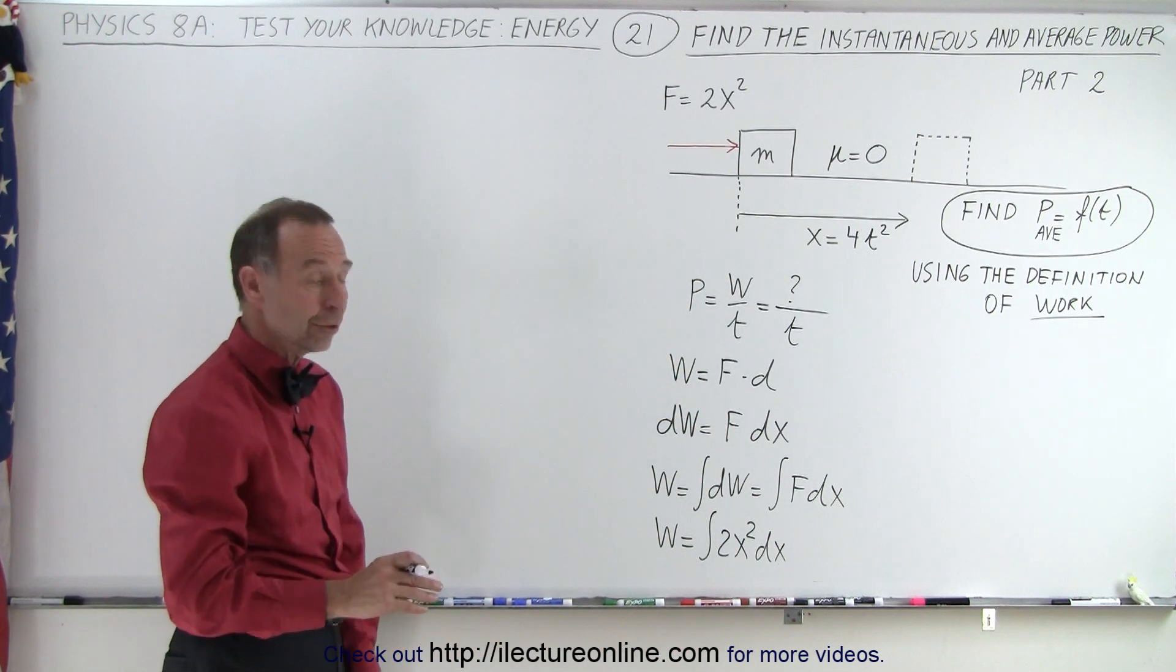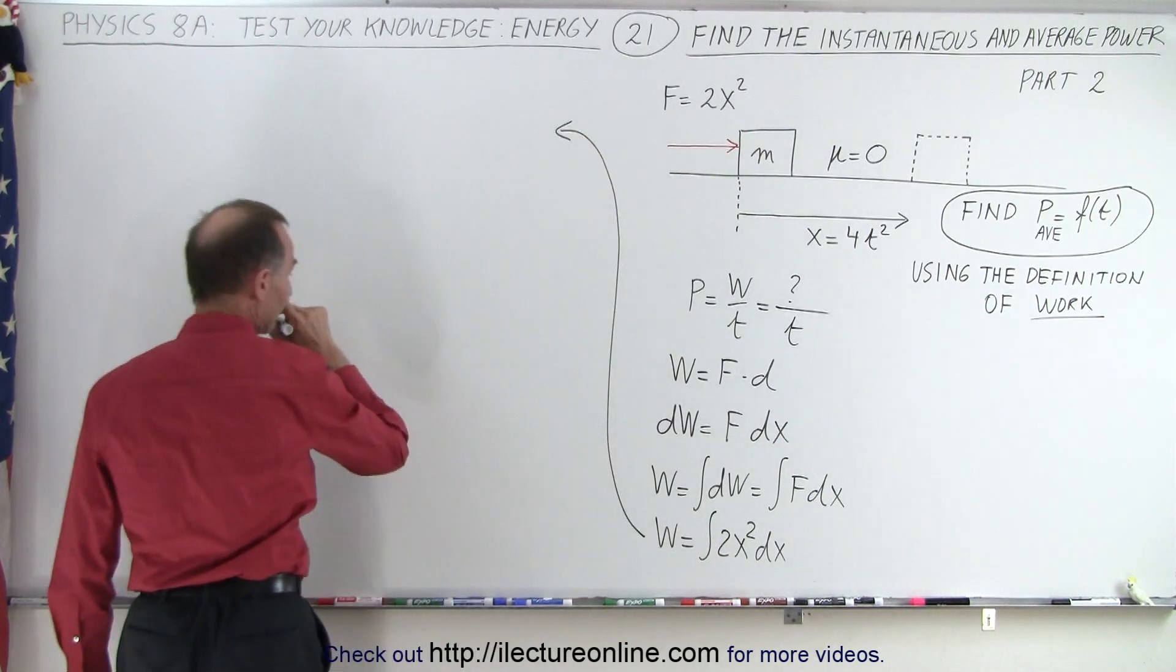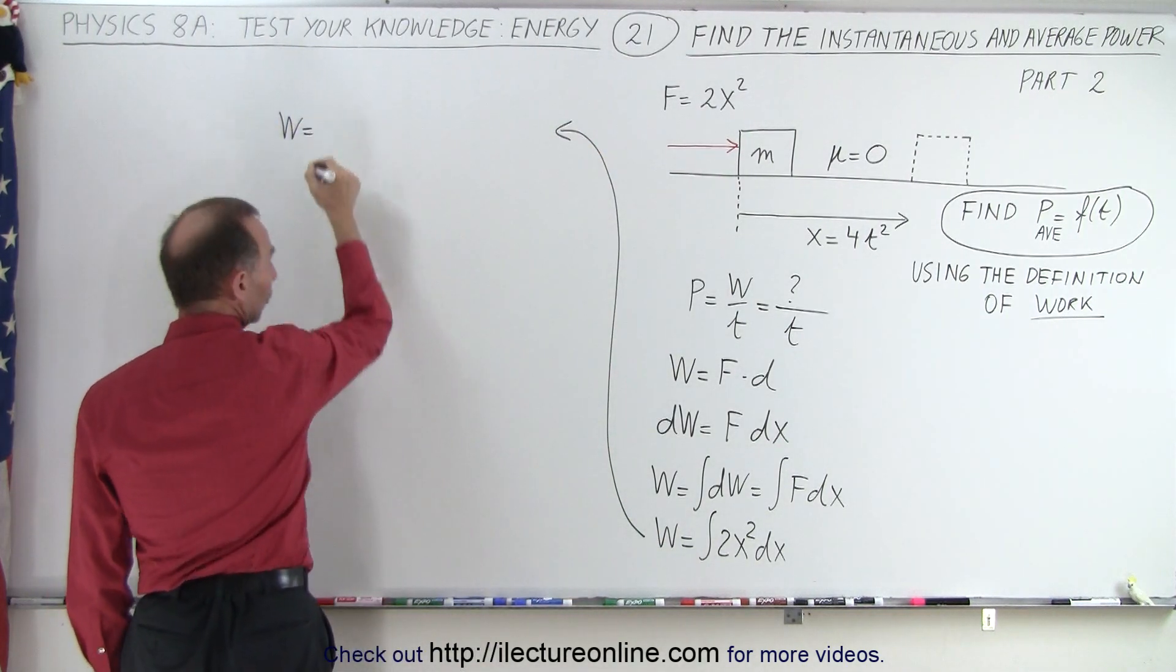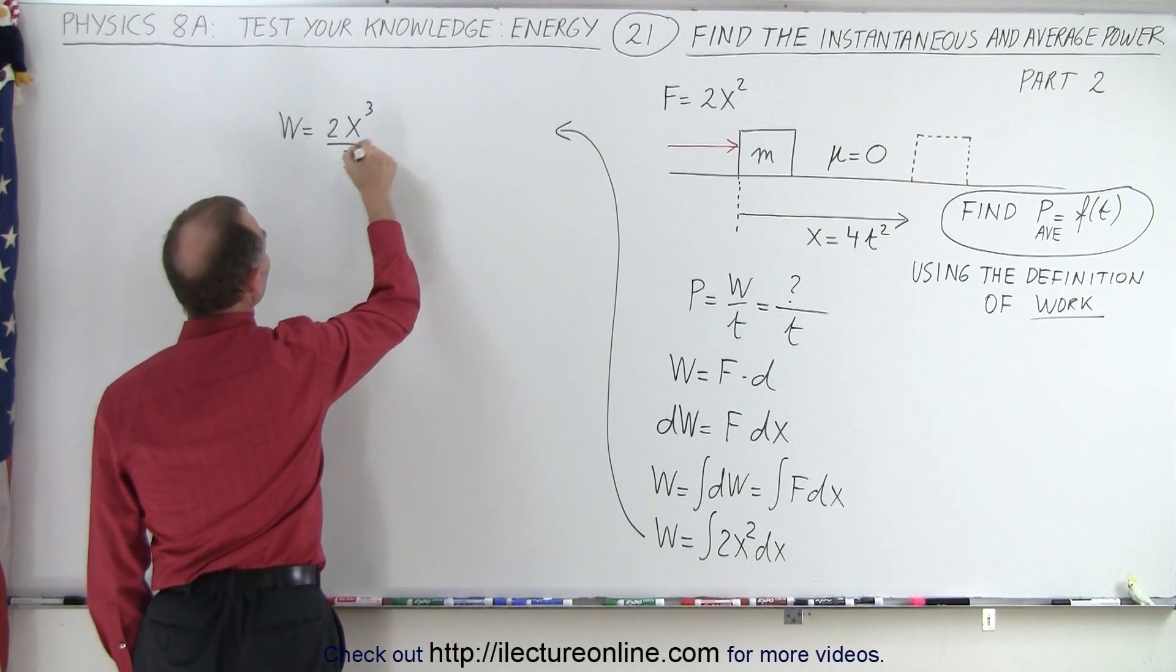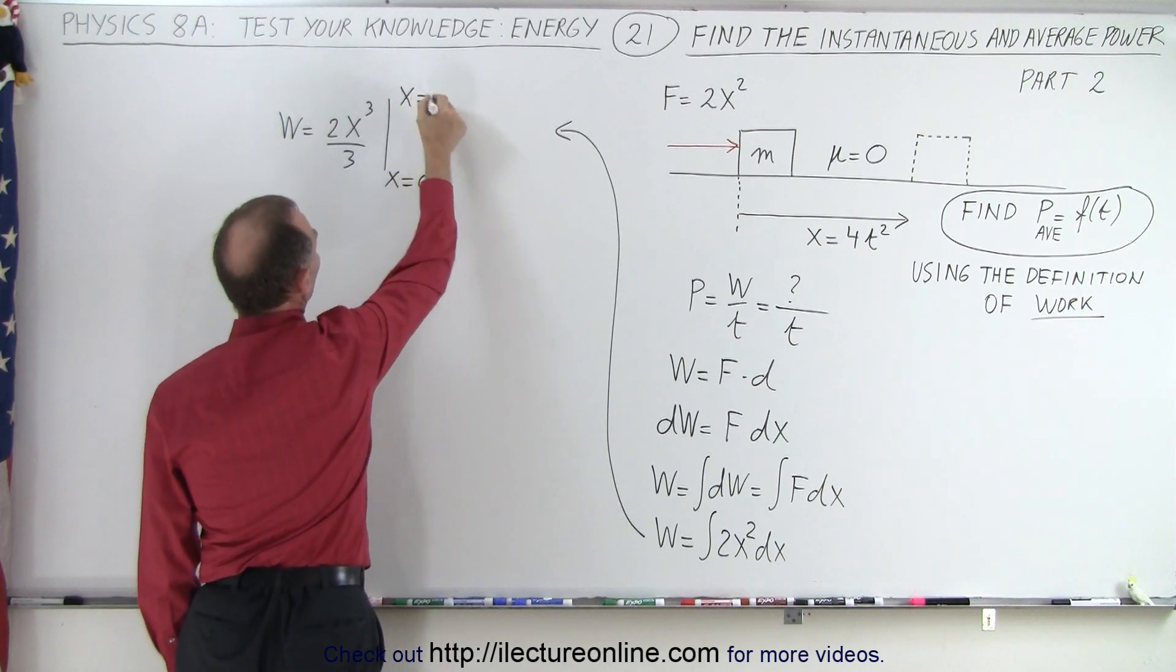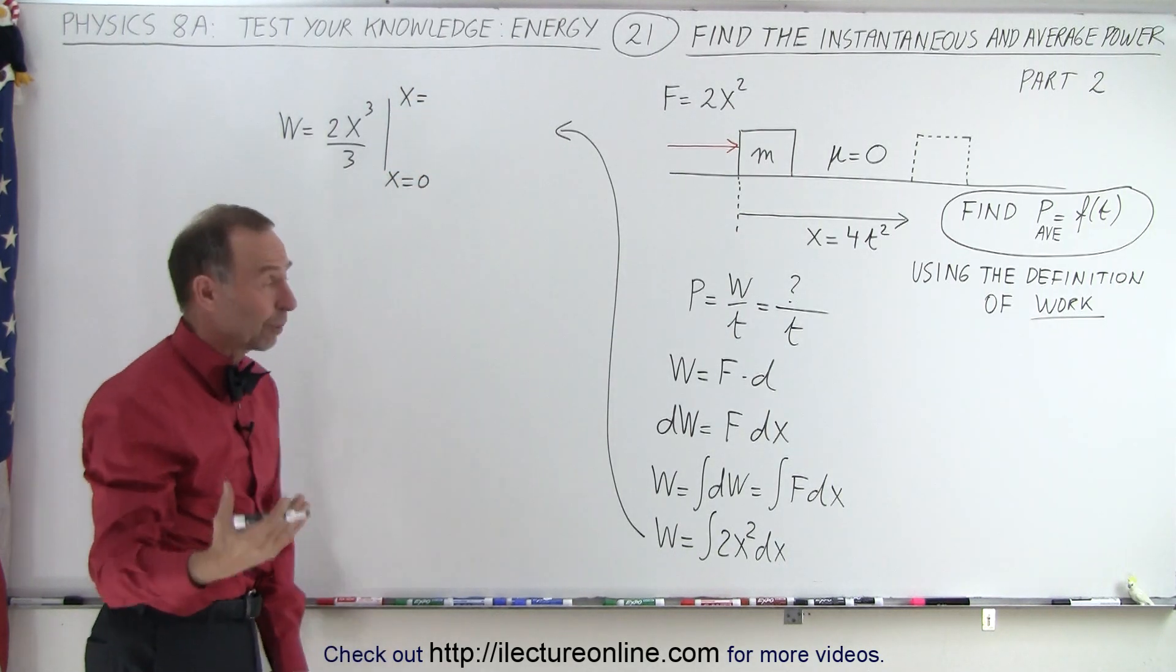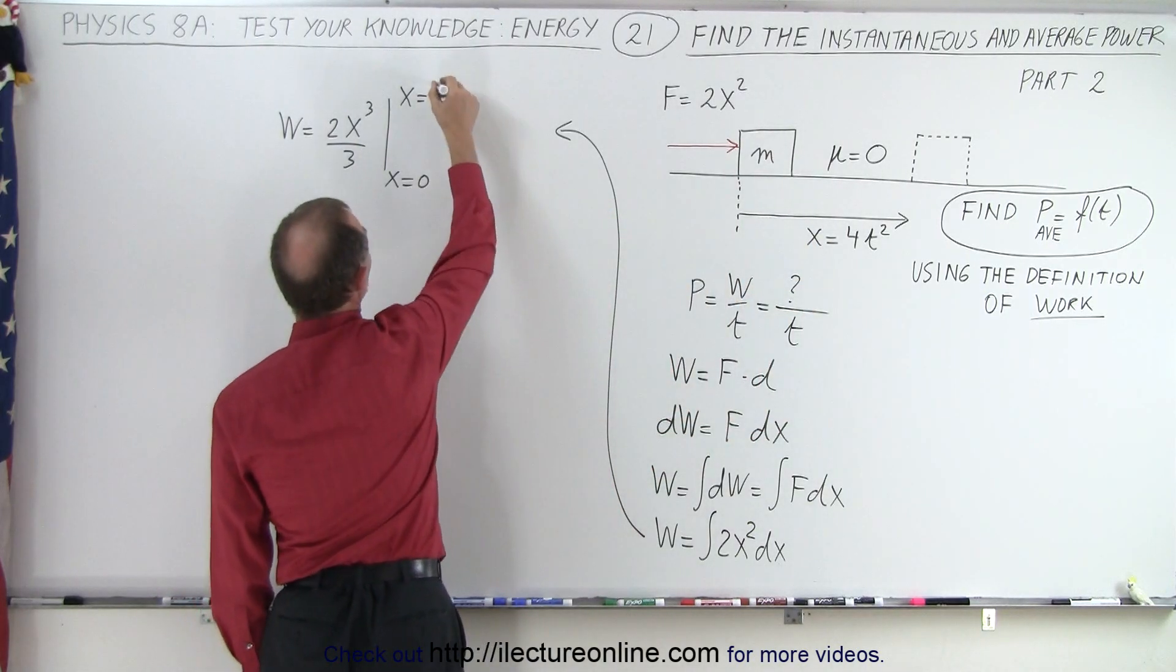Alright, let's go ahead and do that. We can go ahead and continue over here. So that means that work is equal to the integral of 2x² will be 2x³ over 3, evaluated from x equals 0 to x equals, well, since x is expressed in terms of time, it will be x equals 4t².